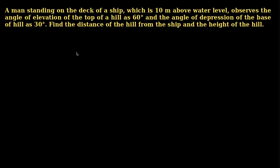A man standing on the deck of a ship, which is 10 meters above the water level, observes the angle of elevation of the top of a hill as 60 degrees and the angle of depression of the base of the hill as 30 degrees. Find the distance of the hill from the ship and the height of the hill.